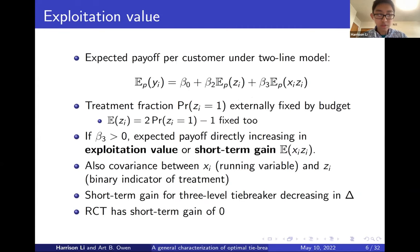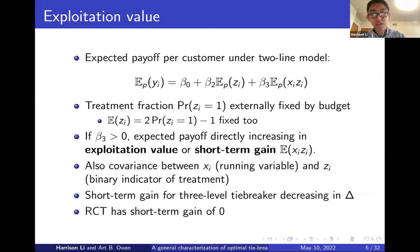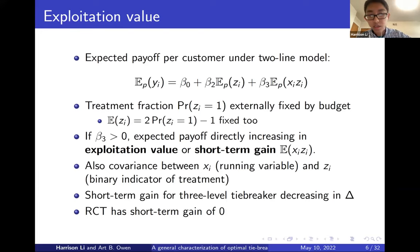In terms of the gain criterion, we're using the same criterion. In the univariate setting, the gain comes down to E of x times z — motivated by the expected value of y under the two-line model, but you can also think of it as the covariance between the running variable x and the treatment binary indicator z. So you can motivate the short-term gain criterion without having to directly think about the y's as a payoff.